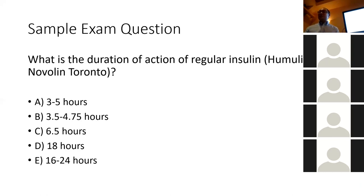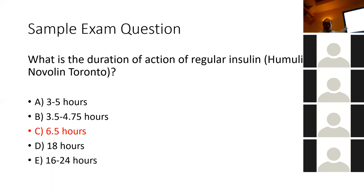This is Appendix 6. The 6.5-hour one here is NovoRapid or Fiasp. This one is Humalog, this is Humulin R or Novolin Toronto, this one is NPH at 11 hours. Appendix usually lasts about 24 hours — closer to the 24-hour mark. Memorize that part.